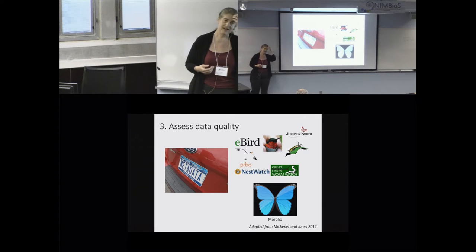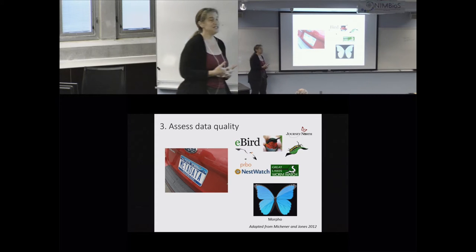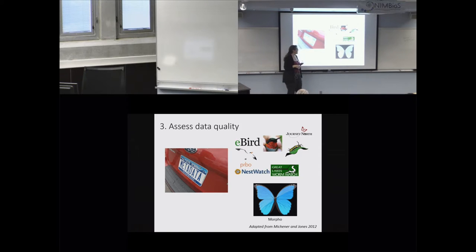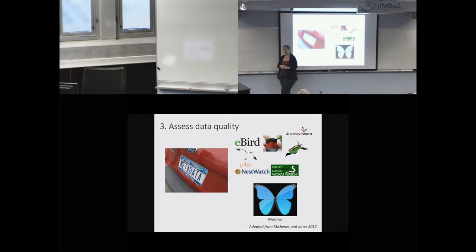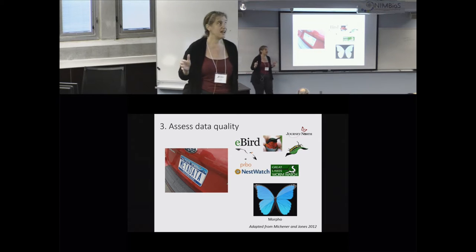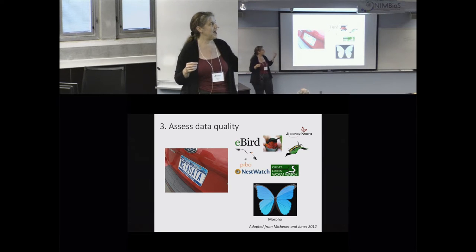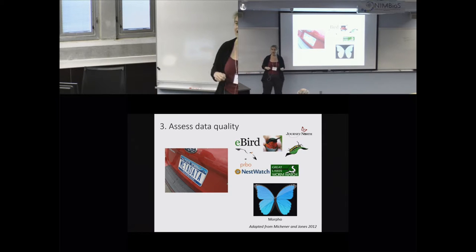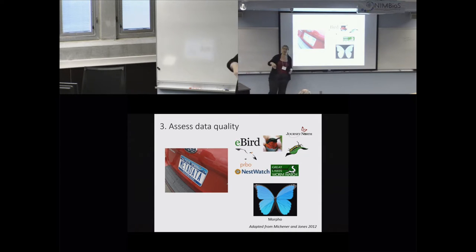You have to learn how to assess data quality — though really everybody should be doing this. It's especially important when you haven't collected the data yourself. Citizen science data quality is always questioned, but the people collecting it are often naturalists who've been in the field for years and know their organisms well, while scientists often rely on field techs or undergraduates who may be in the field for the first time. We should be asking about data quality for all scientists, not just citizen scientists.